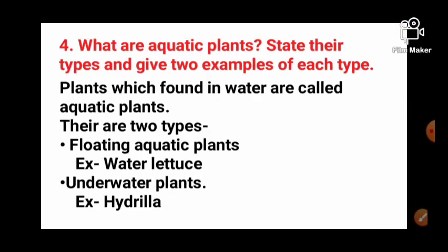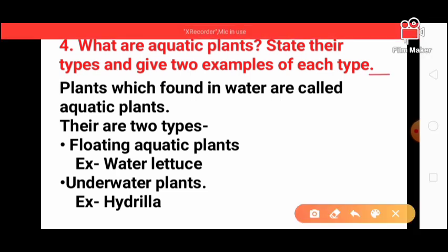What are aquatic plants? State their types and give two examples of each type. Aquatic plants are plants which grow in water. These are of two types: one is floating aquatic plants and the other is underwater plants. Example of floating aquatic: water lilies. Example of underwater plant: hydrilla.